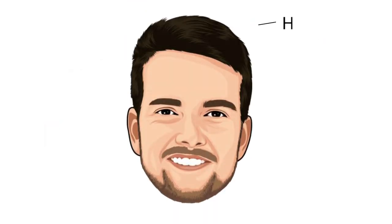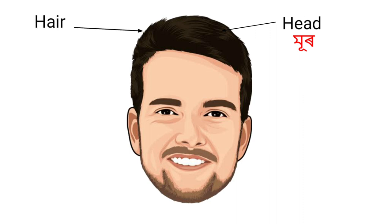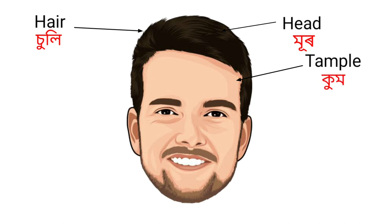First of all, Head — that means Moor. Hair — that means Suli. Temple — that means Kum. Forehead — that means Kopal.